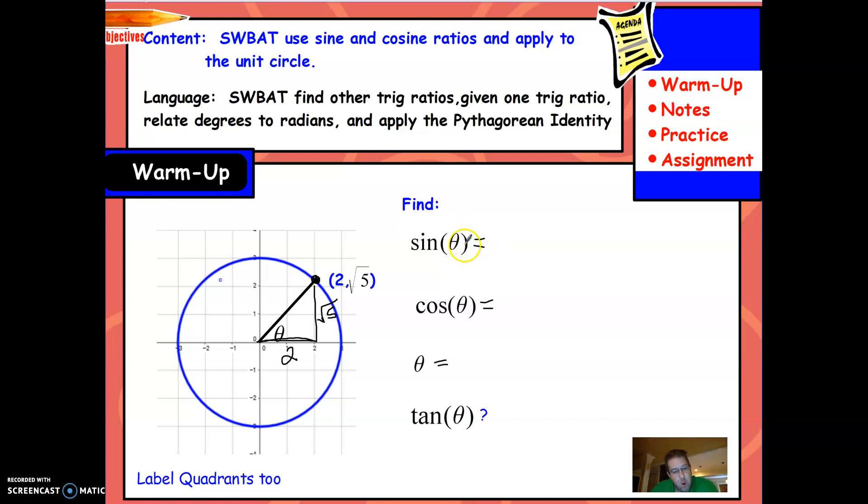So sine is y over r, so that's √5 over the radius. Now the radius here is from here to here. We need to know what that radius is. We can use Pythagorean Theorem. So 2 squared is 4, √5 squared is 5 equals the radius squared. Add those two together, you get 9, and the square root of 9 is 3. So we know the radius is 3.